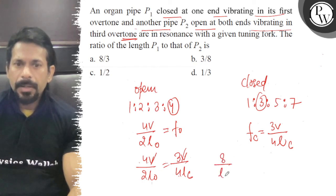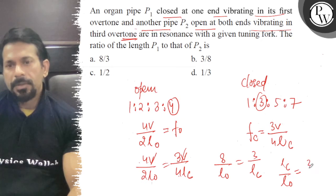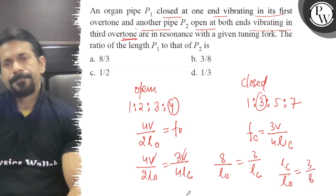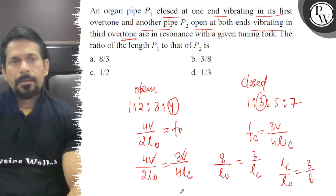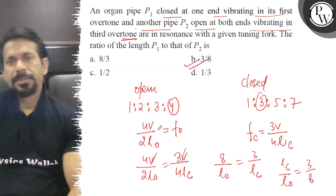So L_closed to L_open is equal to 3 by 8. So this ratio is 3 by 8, P1 to P2, closed to open, 3 by 8. B option is correct, all the best.